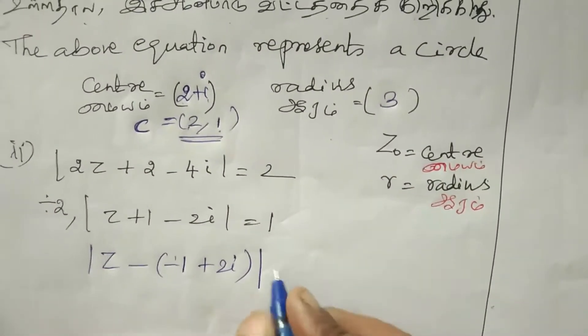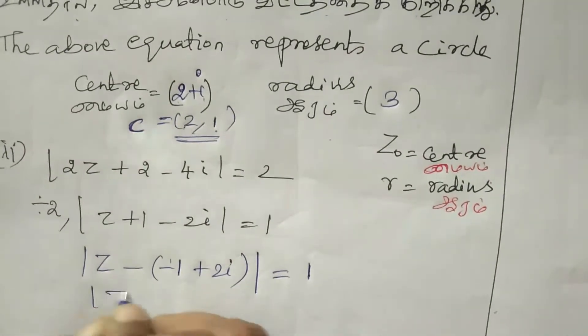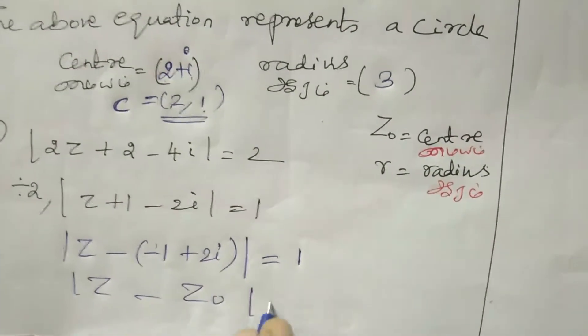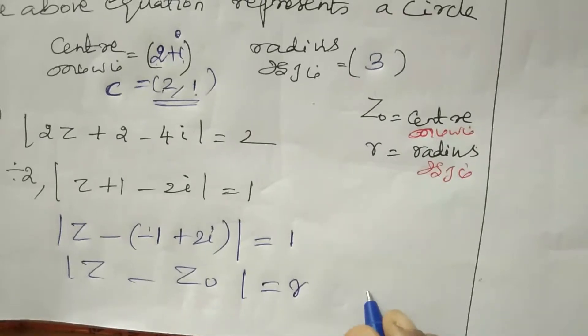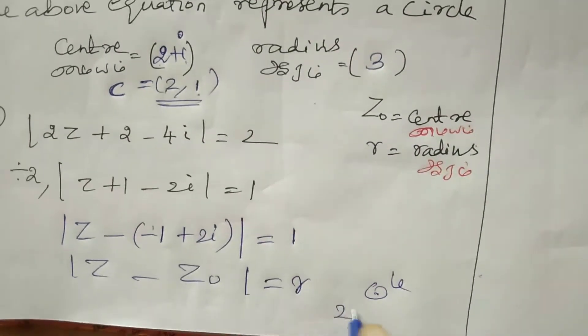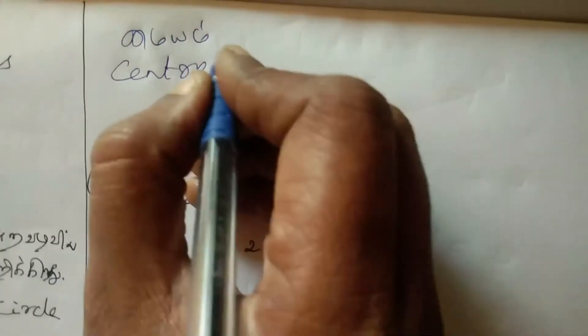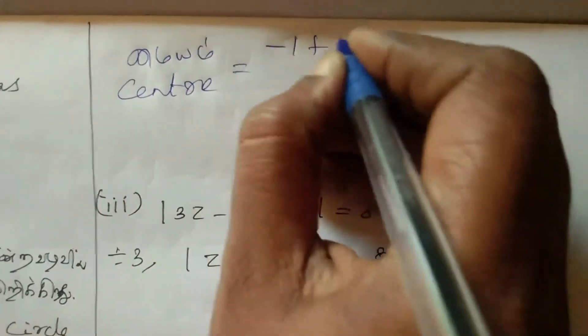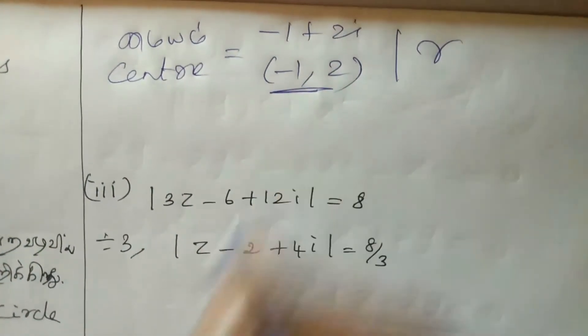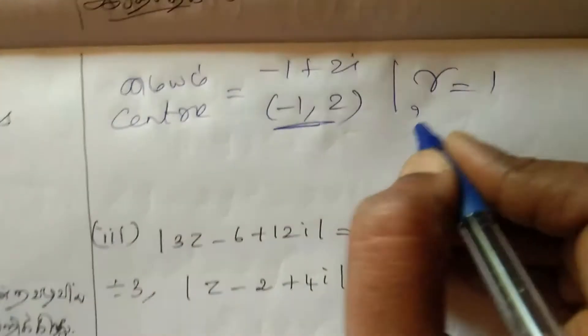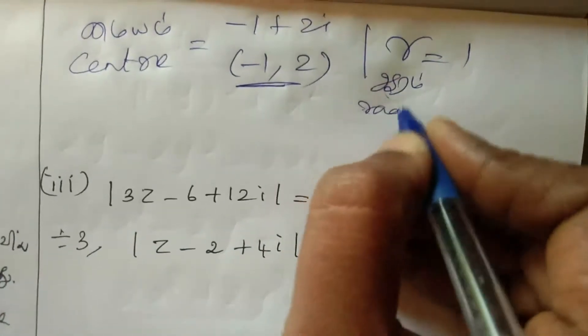Z minus Z naught is the formula. It represents the circle. So the center is minus 1, 2 and radius is 1.